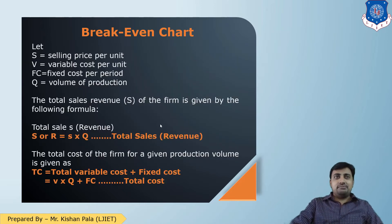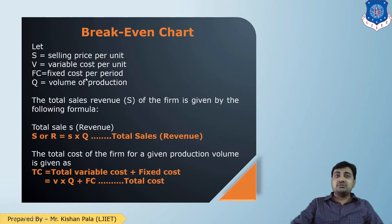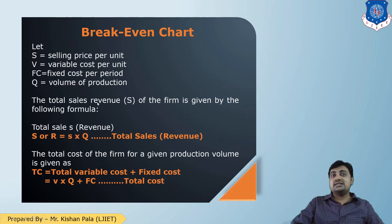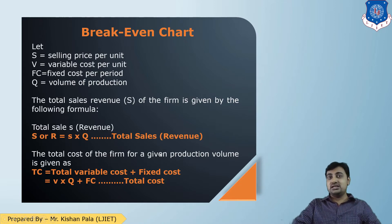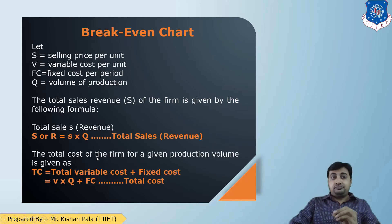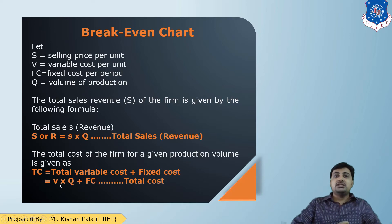In the formulas: S is selling price per unit, V is variable cost per unit, FC is fixed cost per period, and Q is the volume of products. The total sales revenue is given by: Total Sales R = S × Q. The total cost of any production firm is: TC = total variable cost + fixed cost = V × Q + FC.